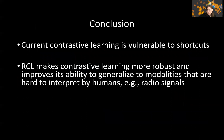What I showed you is that contrastive learning is vulnerable to shortcuts — learning information that is irrelevant to the task of interest and using it to discard information that is of interest. By combining contrastive learning with a reconstruction branch in this RCL framework, we can improve performance dramatically, making contrastive learning robust to shortcuts. And because there are no handcrafted augmentations, it's easy to generalize to modalities that are hard to interpret by humans, such as radio signals.